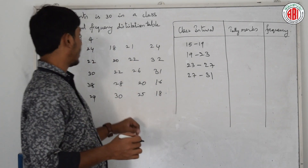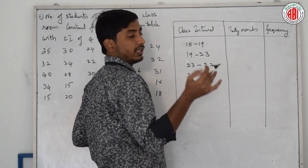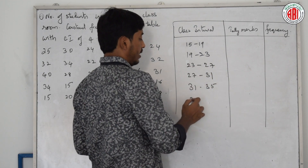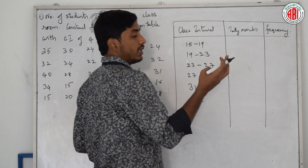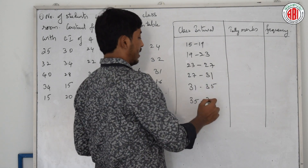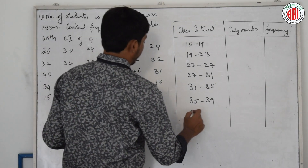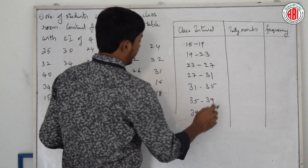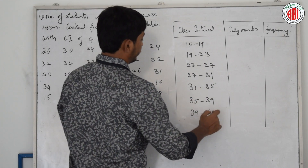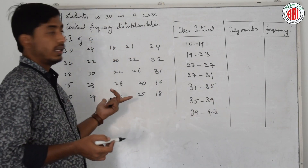Still there are more numbers. So we have intervals: 31 to 35, 35 to 39. And 40 is also there, so we add the interval 39 to 43 to cover all values in the data.